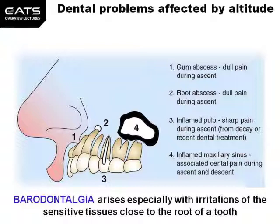Abscesses result in dull pain during the ascent as air pressure decreases. An inflamed pulp in the root of the tooth can result in sharp pain during ascent.